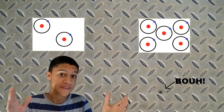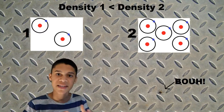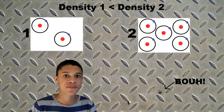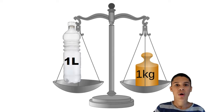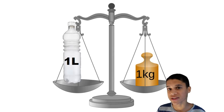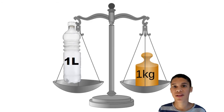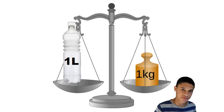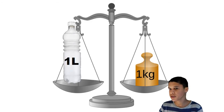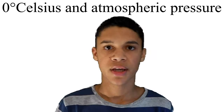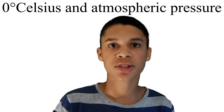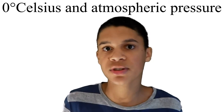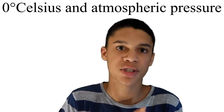Density is how much matter there is in a volume. Basically, it's like the mass of atoms in a given volume. Water, for example, has a density of around 1 kg per liter. It's important to acknowledge that in this video, I will generally talk about density in the standard conditions of temperature and pressure, which are 0 degrees Celsius and atmospheric pressure.